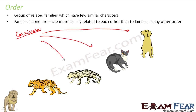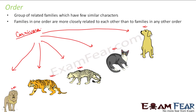Dog, cat, leopard, tiger, and lion all belong to Carnivora. But when you talk about their families, they are different. Dog belongs to a family called Canidae. Cat, leopard, tiger, and lion all belong to the family Felidae. When you talk about the genus for a dog, it is Canis. For a cat, it is Felis. And for leopard, tiger, and lion it is the same — that is Panthera.